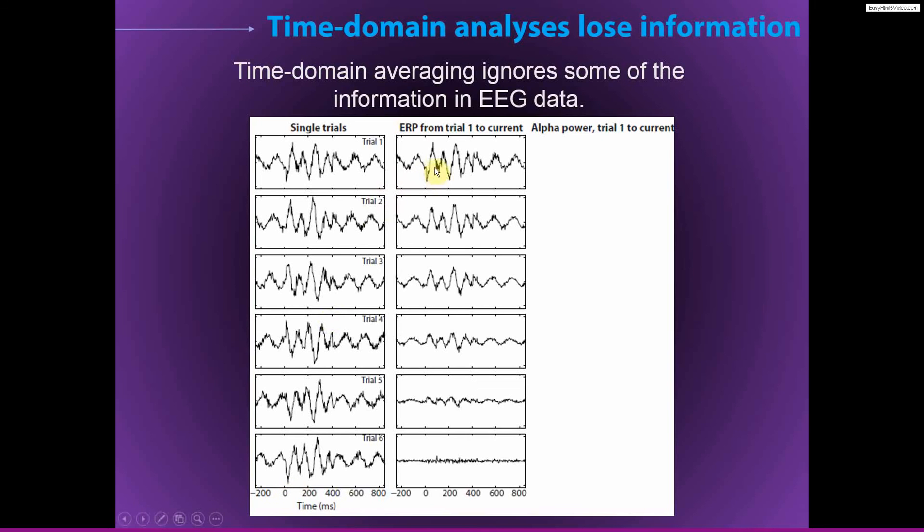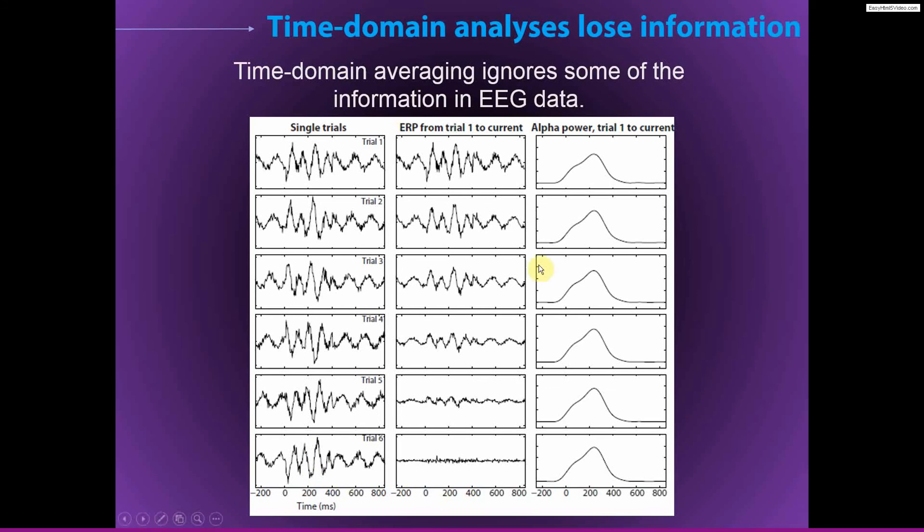However, when we compute the ERP, you can see that the ERP, the time domain average, very quickly, even after only a few trials, goes to zero. And so this plot is showing the ERP from each trial up until, or from the first trial up until each one of these trials. So after only six trials, the ERP is pretty much completely flat. But this may seem a little bit awkward, because your eyes are telling you that there is clearly something going on. And so what's going on here is that these are dynamics that are non-phase locked, we call this, and I will define this term non-phase locked and time locked in a future video. But we can see that a very simple time frequency decomposition method, here just extracting alpha power, allows us to extract this component and quantify this feature of the data very easily with no loss of information after averaging over all of these trials.